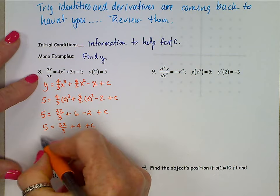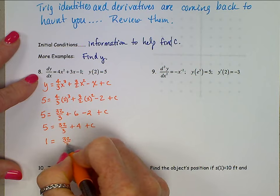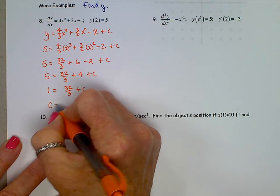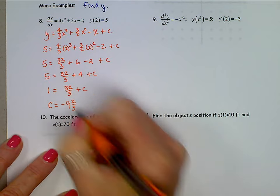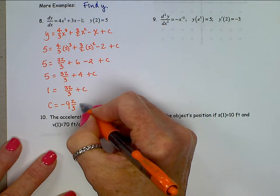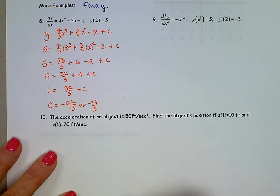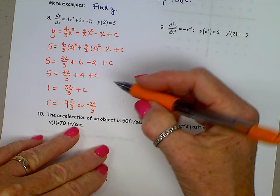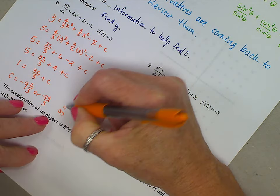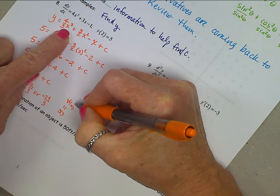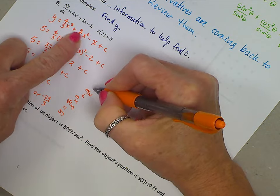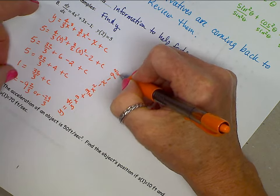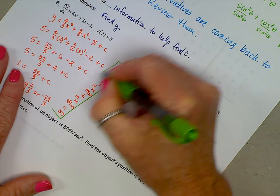Doing some mental arithmetic here, 2 cubed is 8 times 4 thirds, that's 32 thirds, plus here's 4 times 3 halves, 6 minus 2 plus a c. Taking that 4, moving that to the other side, that's 1 is 32 thirds plus a c, 10 and 2 thirds. When we subtract that 10 and 2 thirds over there, we're going to get that c is negative 9 and 2 thirds, or you could have negative 29 over 3. We are not done here, that's just what the constant is, I asked you to find y.